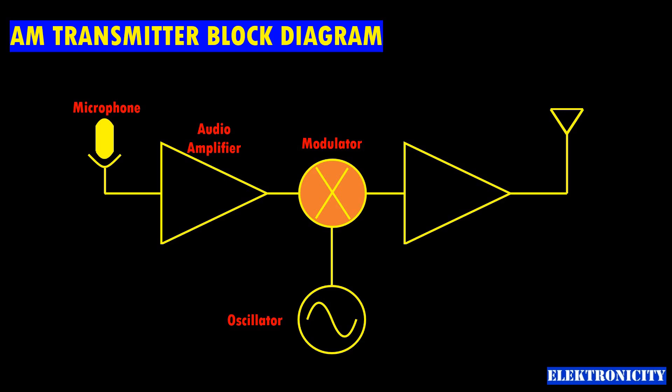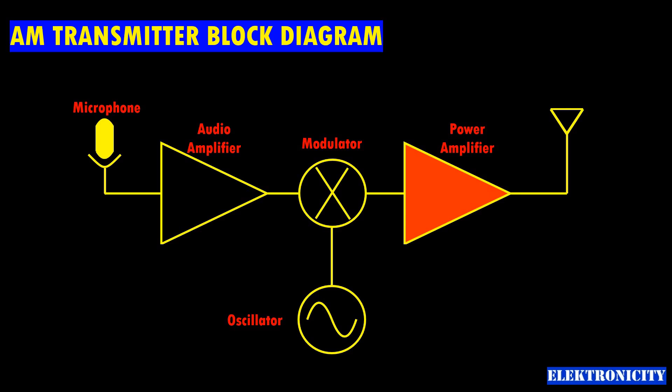This modulated signal goes to the power amplifier which increases the power of modulated signal for transmission and finally sends it to an antenna for propagation through air.